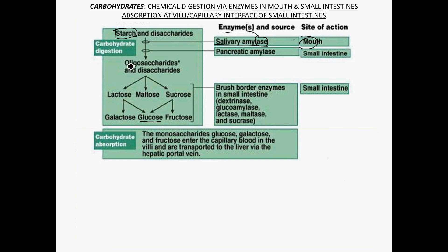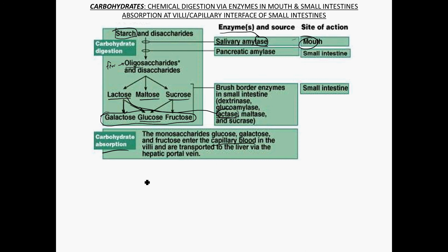Starch can also be broken down into an oligosaccharide — 'oligo' is the prefix meaning few. Disaccharides that are consumed also need to be broken down. Lactose, maltose, and sucrose each have corresponding enzymes — for instance, lactase breaks down lactose into galactose and glucose. These monosaccharides are then absorbed into the capillary bed or bloodstream.